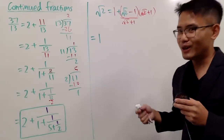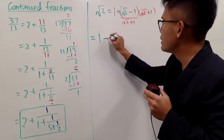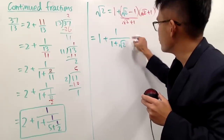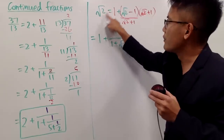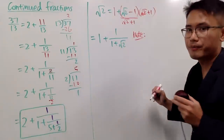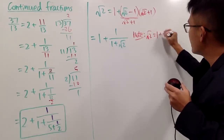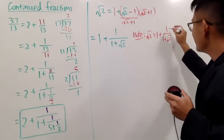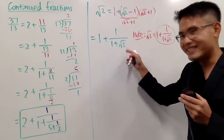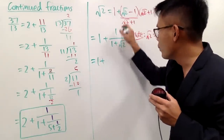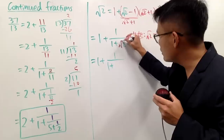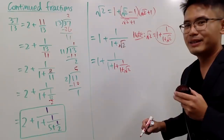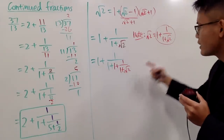So I will put down plus 1 on the top. Let me write the 1 first, then plus square root of 2. So what we are saying is square root of 2 equals 1 plus 1 over (1 plus square root of 2). And here we have the square root of 2 again — so I can just plug in this expression into that square root of 2. We end up with 1 plus 1 over (1 plus (1 plus 1 over (1 plus square root of 2))).